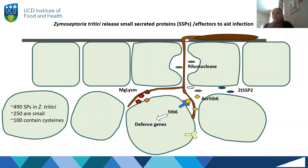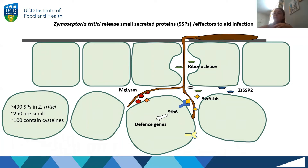There are 100 of these cysteine-containing proteins being secreted into the plant leaf, and we really don't know what most of them do — we only know what a handful of them do. One is recognised by one of the few resistance genes that have been cloned. Another acts like a cloaking device: it sticks to the outside surface of the fungus and tries to hide the fungus from the plant's immune system. A lot of these secreted proteins seem to be involved in trying to hide from the plant's immune system and aid the pathogen in getting into the plant to feed.